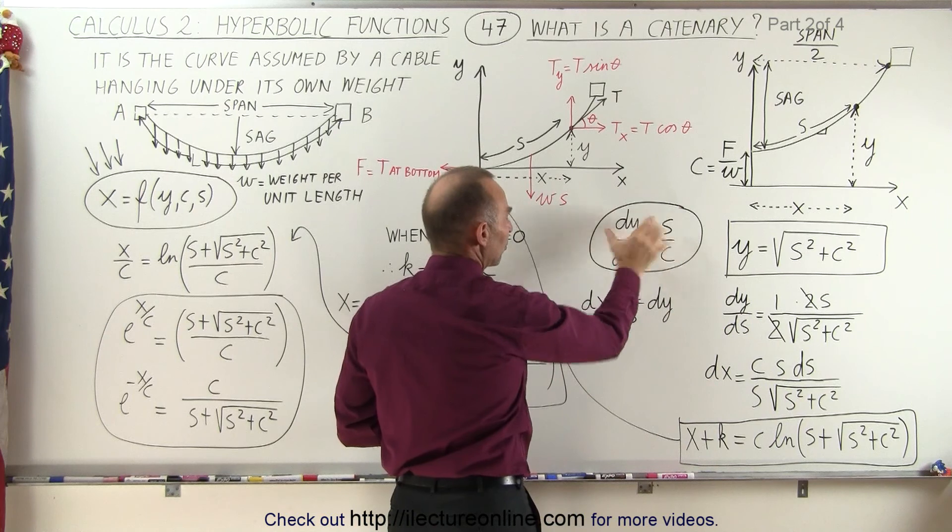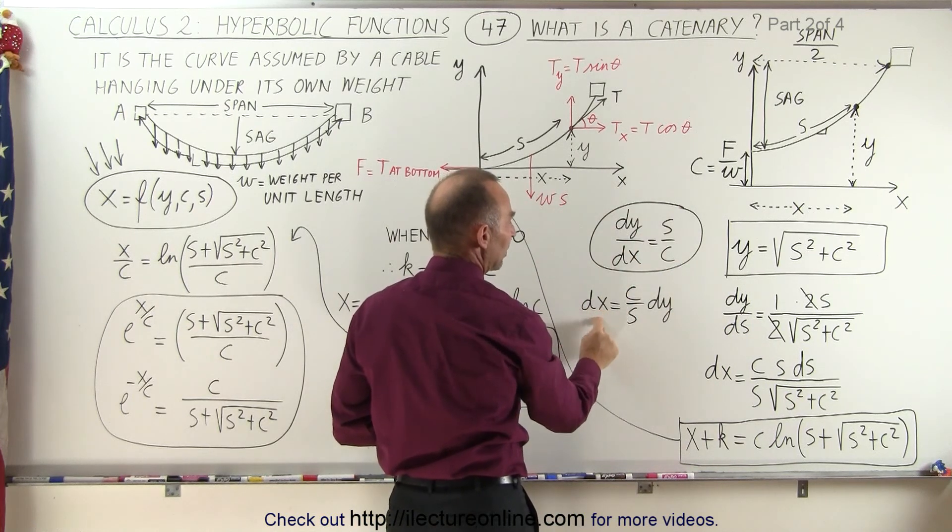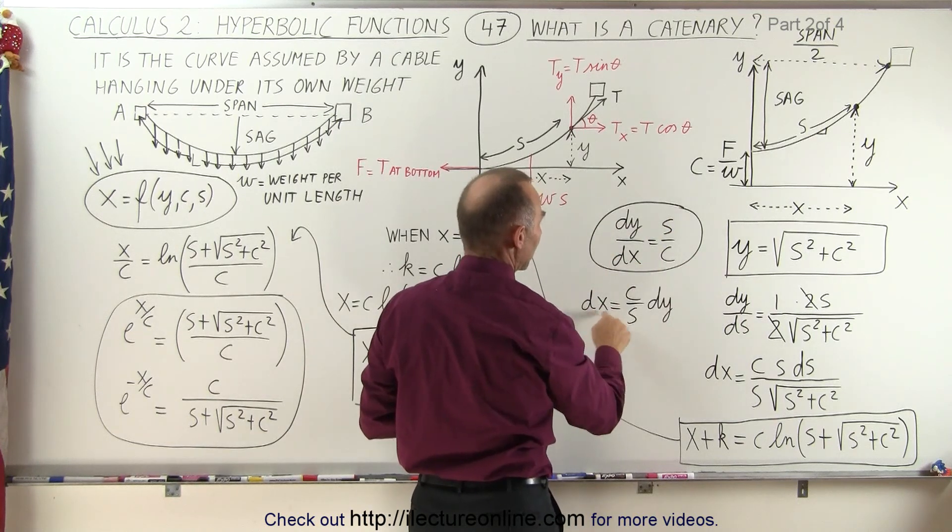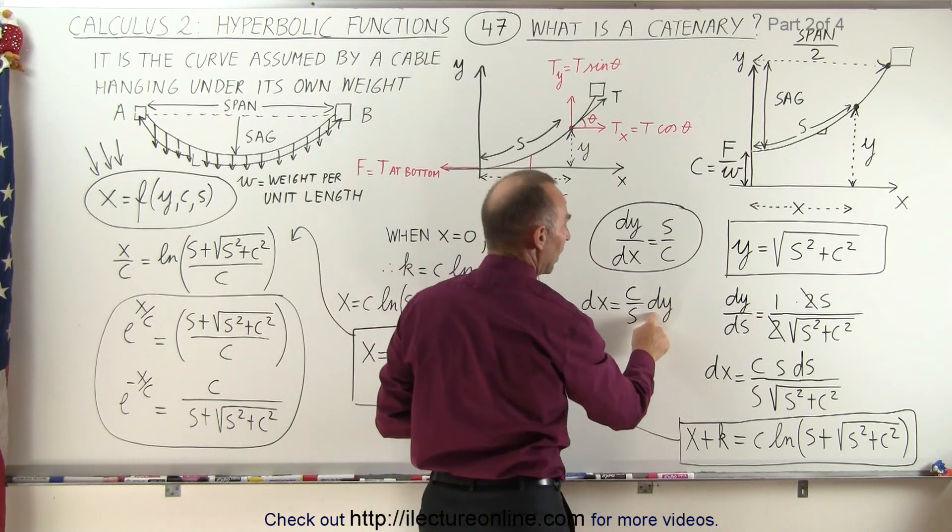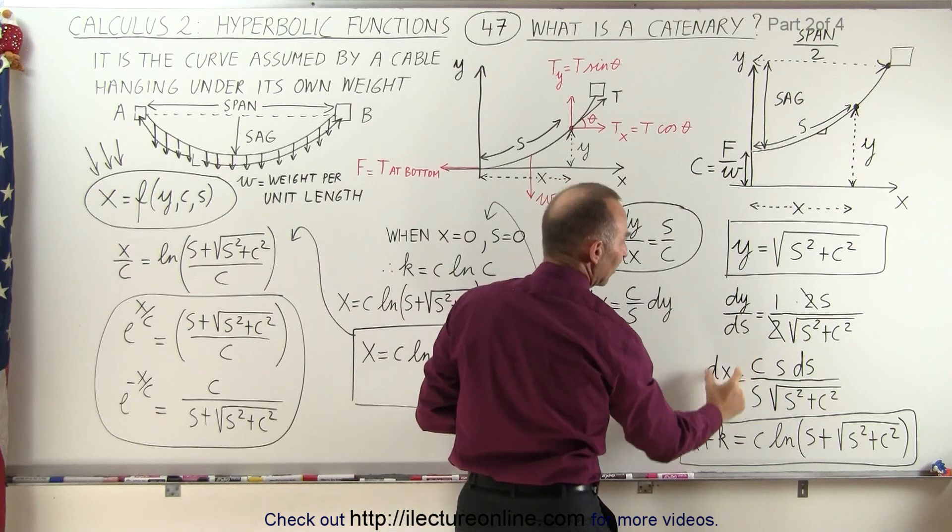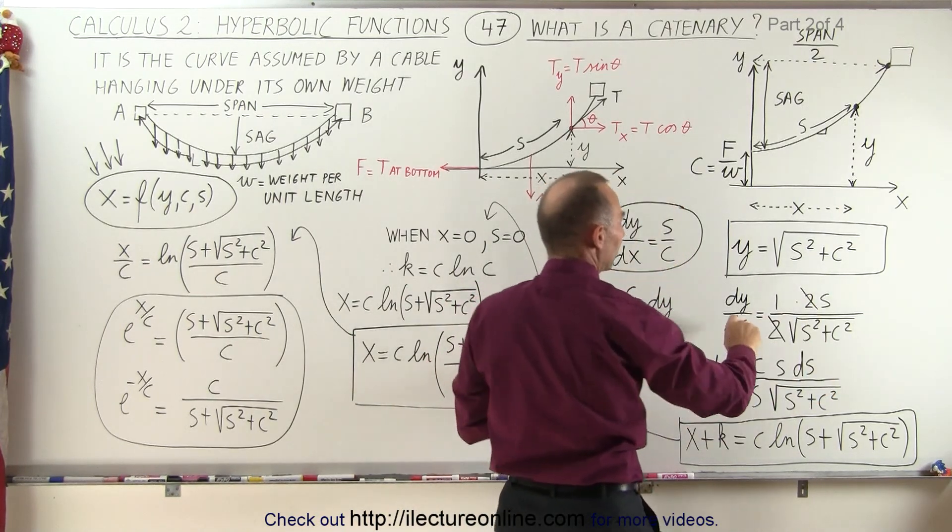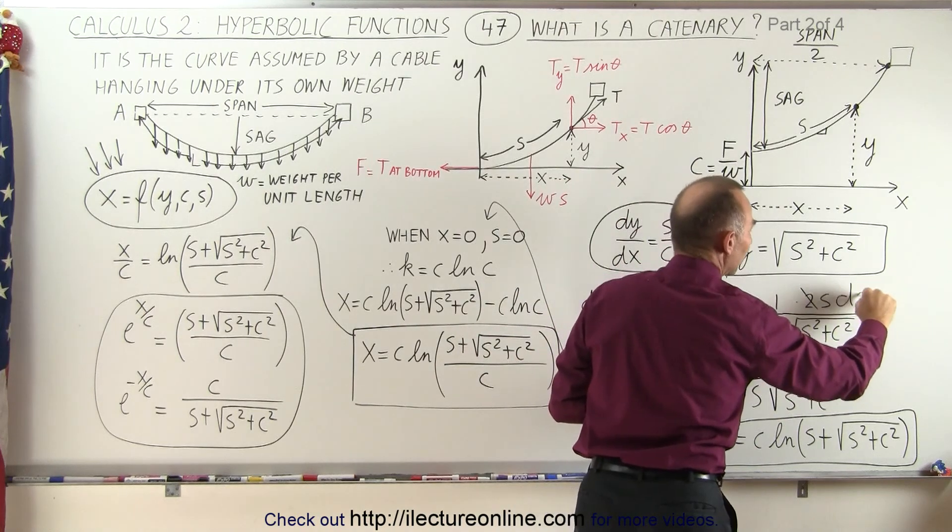And then we take this equation right here and solve this equation for dx. So we'll simply take the inverse of that and move the dy across, so we have dx equals c over s times dy. And then we take this ds and move it over here.